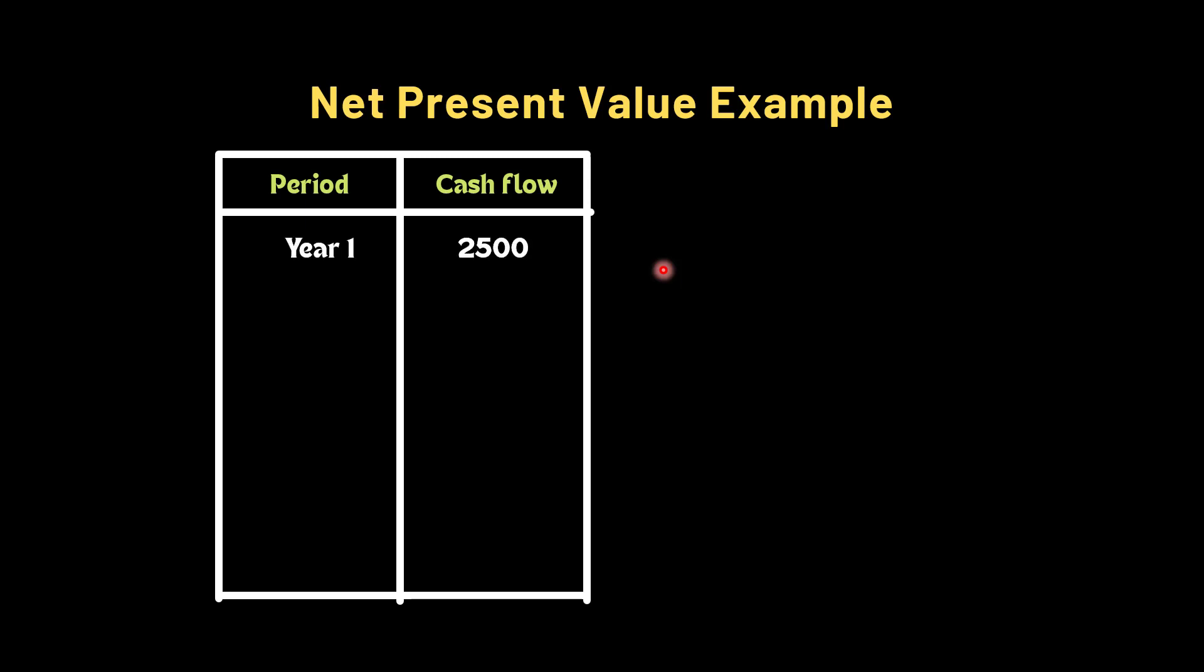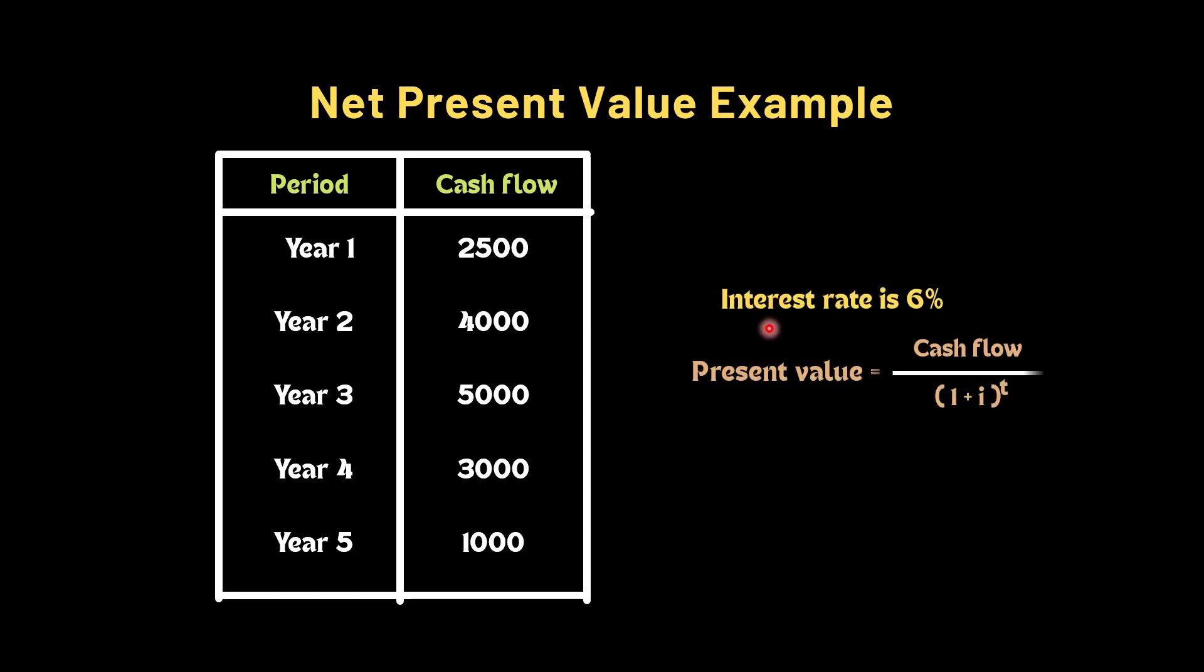The cash we get in the first year is $2,500, second year is $4,000, third year is $5,000, fourth year is $3,000, and the last year is $1,000. The interest rate is 6%.